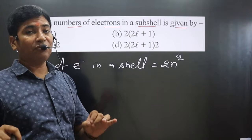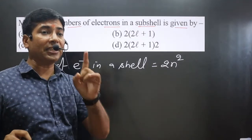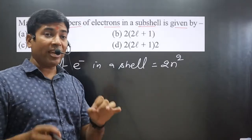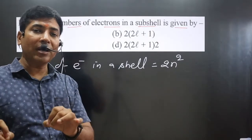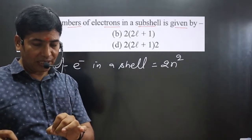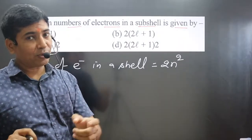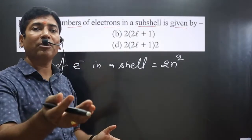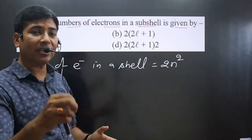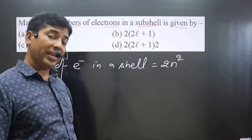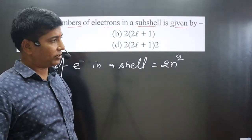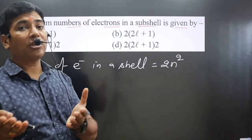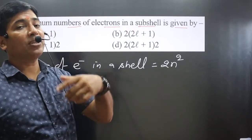From the subcell, we can determine the number of orbitals. Each orbital can carry 2 electrons. So if we know the number of orbitals, we can calculate the total number of electrons — the number of orbitals multiplied by 2 gives the total number of electrons present in a subcell.